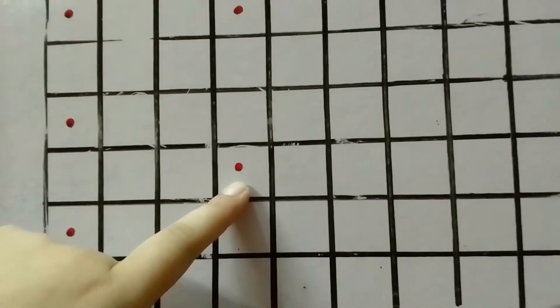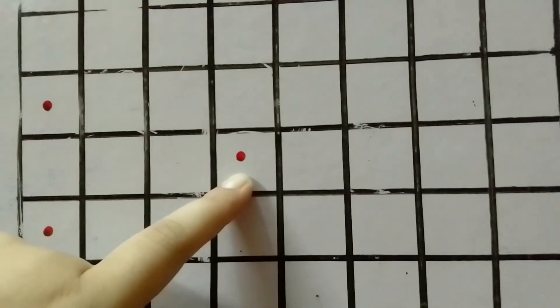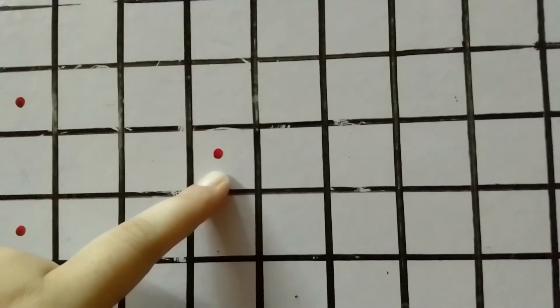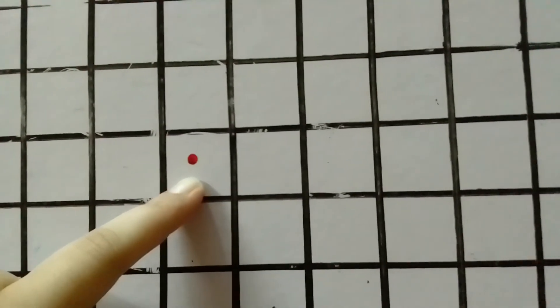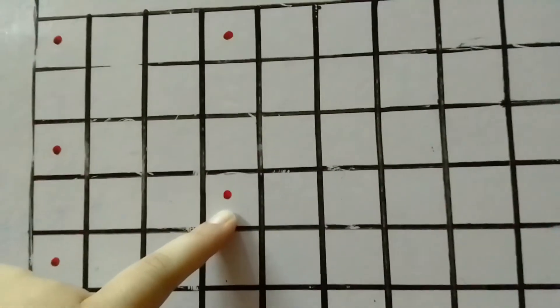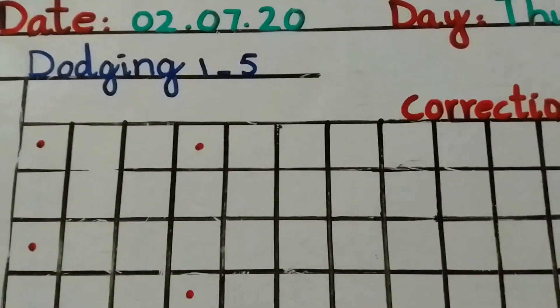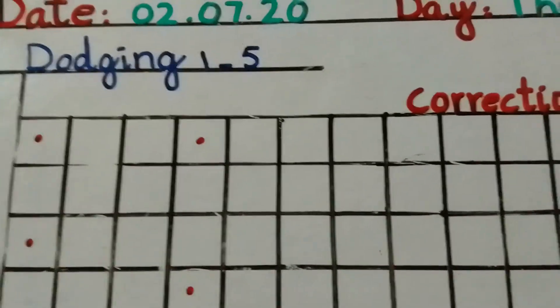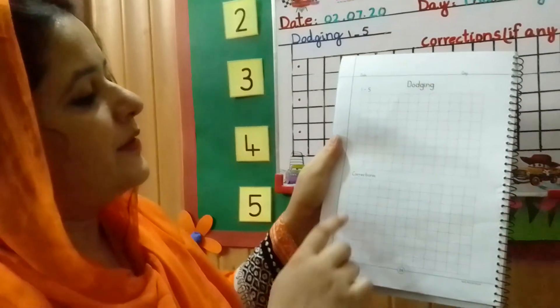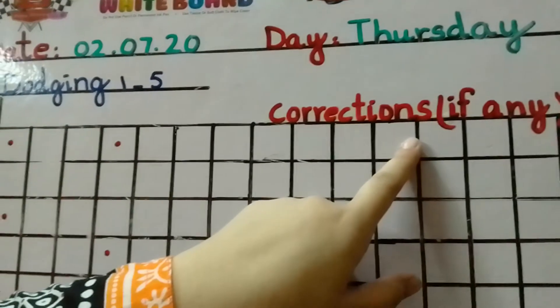Now this is the last dot. Please write down number 1 there. Number 1. Your dodging is complete. Dear mother, here is written 'corrections.' And on my board I have also written 'corrections, if any.'